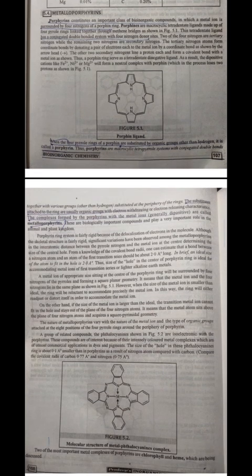A metal ion of appropriate size sitting at the center of the porphyrin ring will be surrounded by four nitrogens of the pyrrole, forming a square planar geometry. It means that the metal ion and the four nitrogens lie in the same plane as shown in figure 5.1.